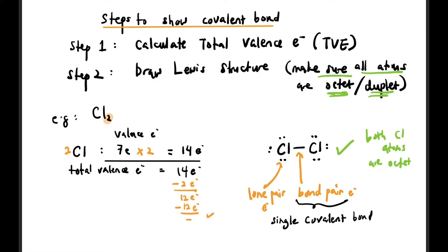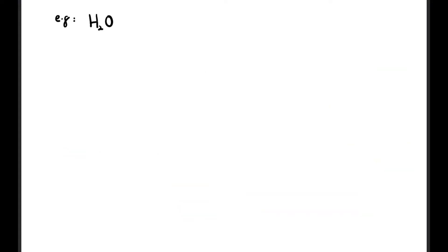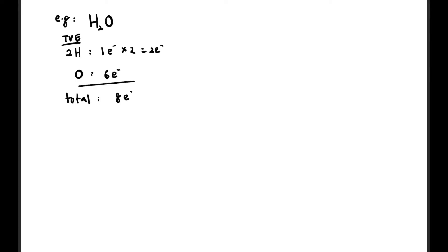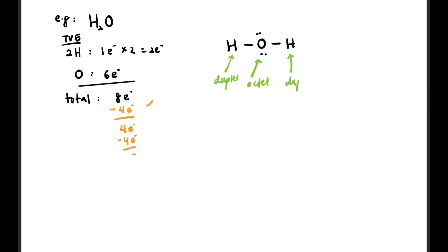Now let's check H₂O. We have two hydrogen atoms with one electron each, so two electrons, plus one oxygen with six electrons, giving a total valence electron count of eight. Oxygen is the central atom, so we draw H–O–H, using four electrons, leaving four. We place those four electrons on oxygen since both hydrogen atoms are already duplet. Oxygen has 1–8 electrons (octet) and hydrogen is duplet — this is the structure of H₂O.